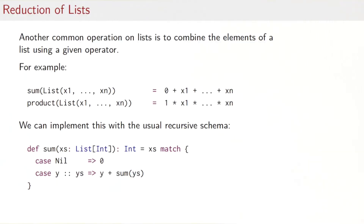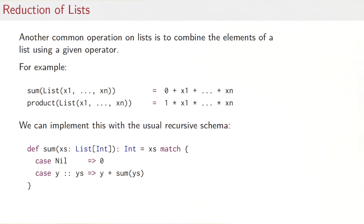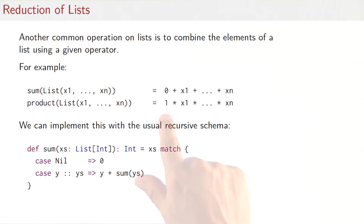Another common operation on lists is to combine the elements of a list using a given operator. For instance, to take the sum of a list you would put a plus between adjacent elements, or to take a product you would use a multiplication operation. To cater for empty lists, we deal with that by taking zero plus in the sum and one times in the product — the unit value of the operation — so our definitions can also deal with empty lists.